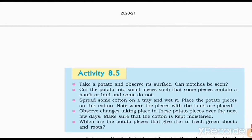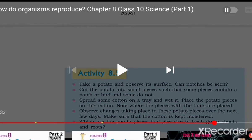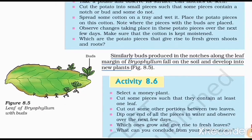Note where the pieces with the bud are placed. After four to five days, you should moisten the cotton and observe the changes that take place in the potato pieces. There is a root as well as a shoot that comes on the surface of the potato — it gives fresh green shoots as well as roots.